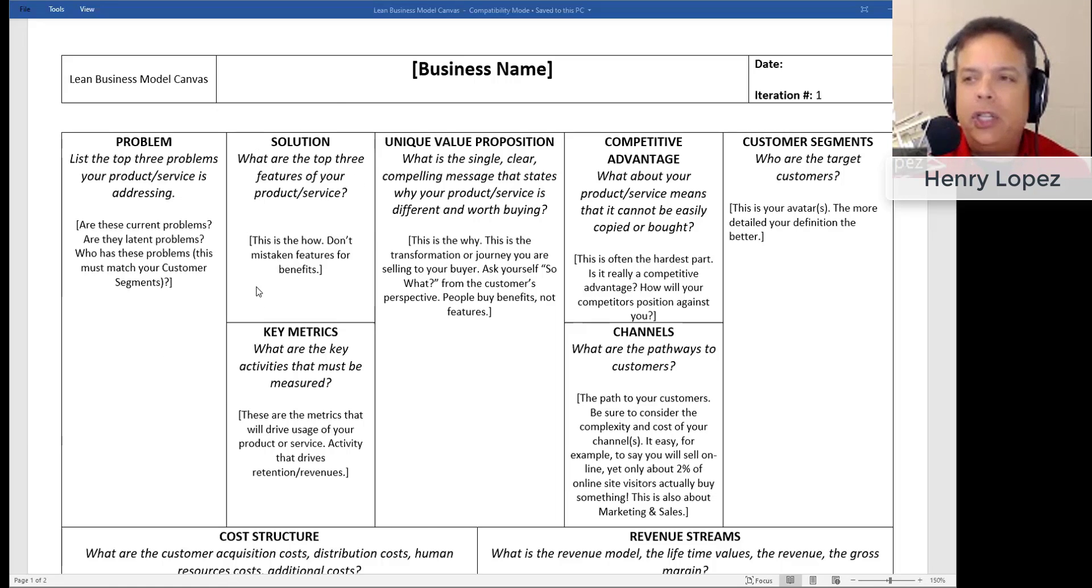What is the solution you are offering? What are the top three features of your product, functions or components of your solution? When I say product, I'm talking about product or service generically. This is not necessarily how you do it - this is the functions or the pieces, the components of what you offer that address the problems you identified.